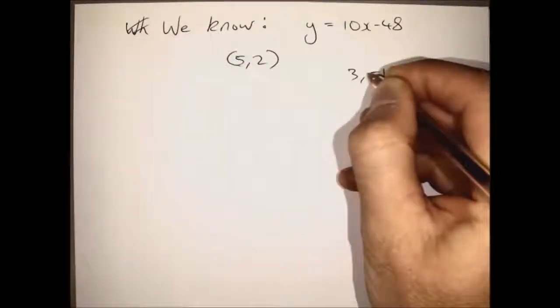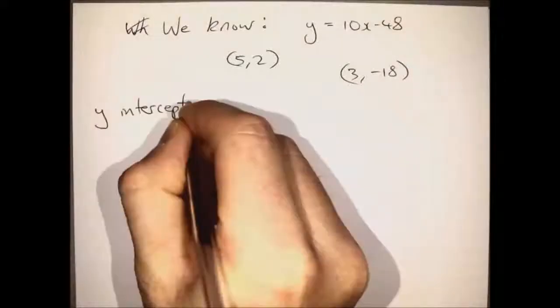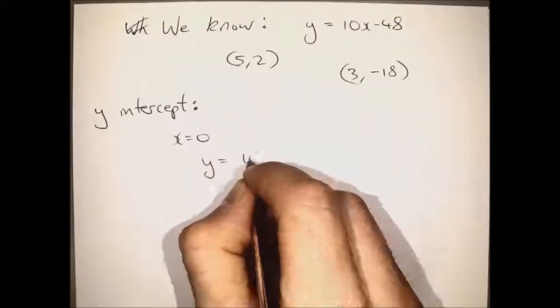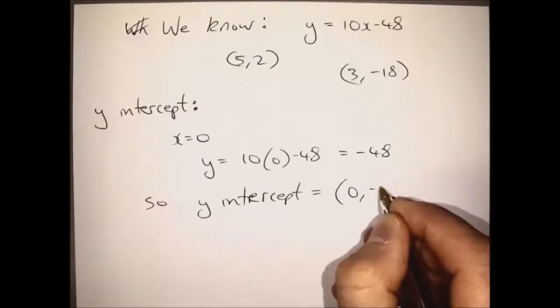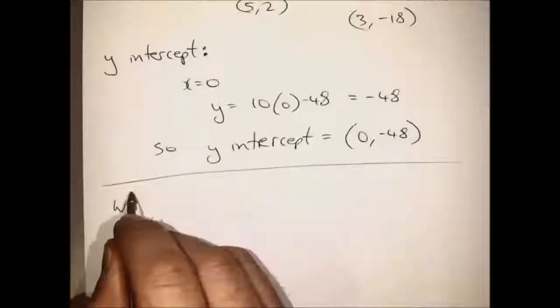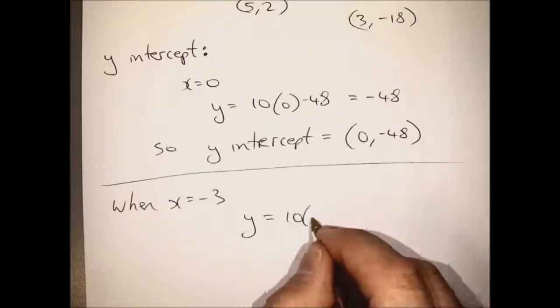We know some points: 5, 2 is on the line, 3 minus 18 is on the line. The y-intercept is when x equals 0. So set x equal to 0, we get minus 48. So the point, the y-intercept is 0 minus 48, that's where the line crosses the y-axis.